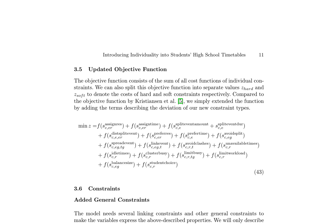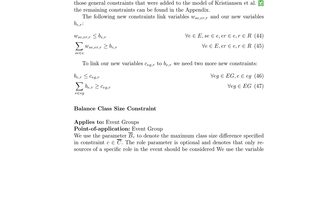The updated objective function for introducing individuality into students' high school timetables consists of the sum of all cost functions of individual constraints, split into Z-hard and Z-soft to denote costs of hard and soft constraints. This function extends the objective function by Christensen et al. by adding terms describing the deviation of new constraint types. The function is formulated as a minimization problem where the cost function F is a sum of 15 terms, including costs associated with student assignment, time assignment, event splitting, distance between split events, resource preference, time preference, avoiding split events, spreading events, linking events, avoiding clashes, unavailable times, idle times, cluster busy times, limiting workload, balancing size, and student choice.